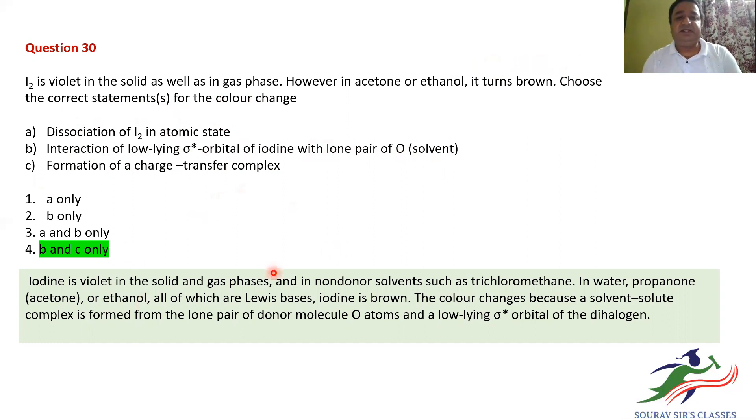Now, iodine is violet in solid and gaseous phases and in non-donor solvents like dichloromethane or carbon tetrachloride. In water, it does not dissolve, but iodine in combination with KI dissolves in water. Or in propanol or ethanol, such Lewis bases, iodine becomes brown.